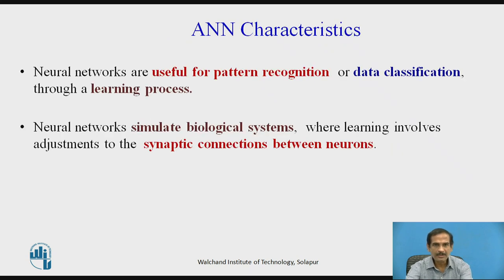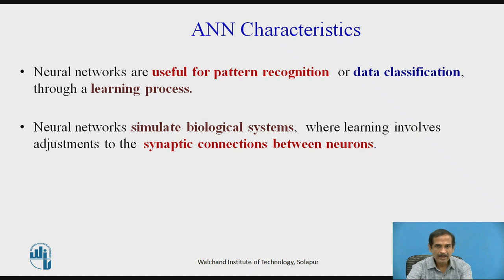Neural networks are useful for pattern recognition or data classification through a learning process. Learning outputs a change, and this change has to be observed in our neural network from the input. Neural networks simulate the biological system. When learning involves, there are adjustments to the synaptic connections between the neurons.